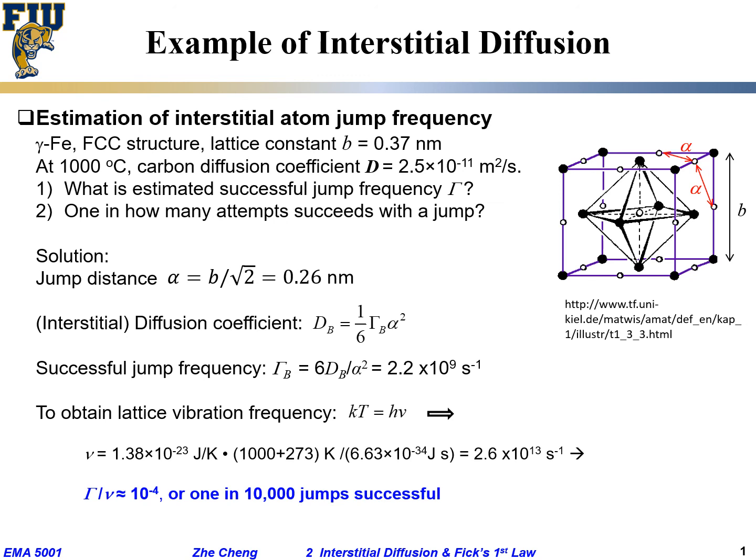How many? 1 in 2? 1 in 10? 1 in 100? In this case, at this temperature, 1 in 10,000 at 1000 degrees C. And you can imagine, when the temperature goes lower, lower, lower, you need more attempts to have a successful jump. Make sense?